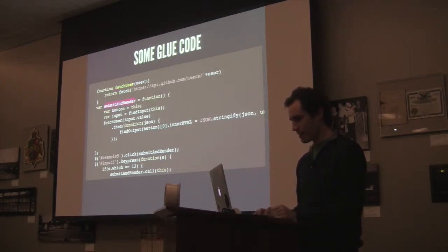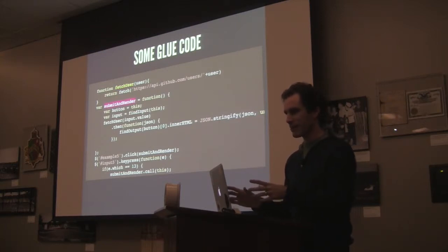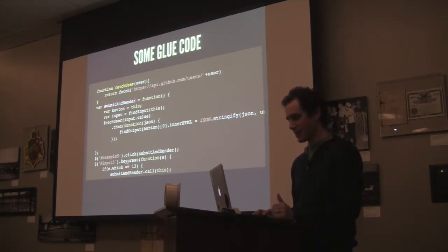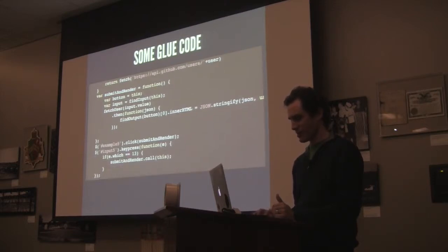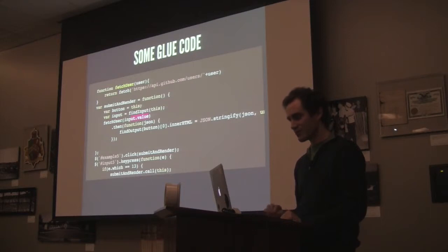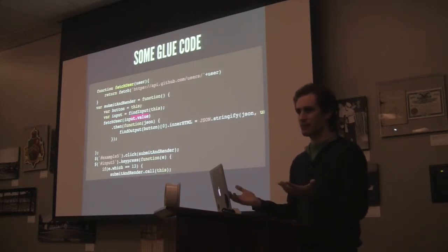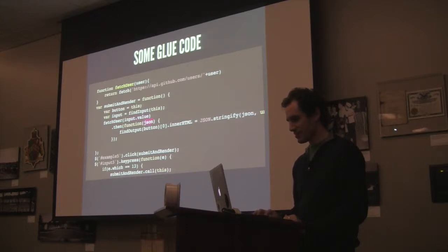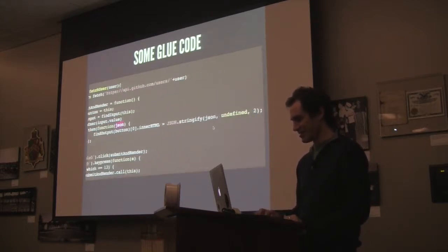Here's glue code for fetching a user, which just wraps that fetch call. Notice I just return it — fetch returns a promise, and this method returns a promise as well. These are all promise-returning methods. You're in the promise land now, so you need to stay there. I have a click button and an input — when I press Enter with keycode 13, I call 'submit and render'. I grab the button and input, fetch the user based on the input value, which will be a GitHub username, and stuff the result into the DOM.